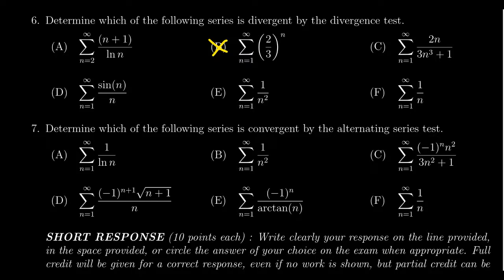This one over here, if you look at this one, the top is a 2n, the bottom is a 3n cubed. So the sequence is approximately 2 over 3n squared. As n goes to infinity, that's going to go to zero. So that could be convergent, it could be divergent, I don't know, but it's not divergent by the divergence test.